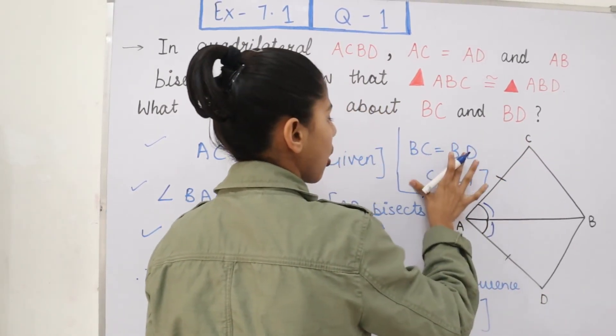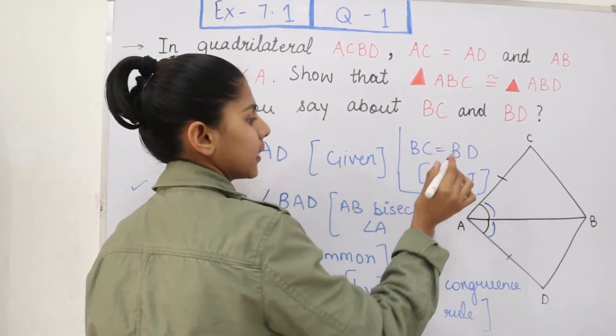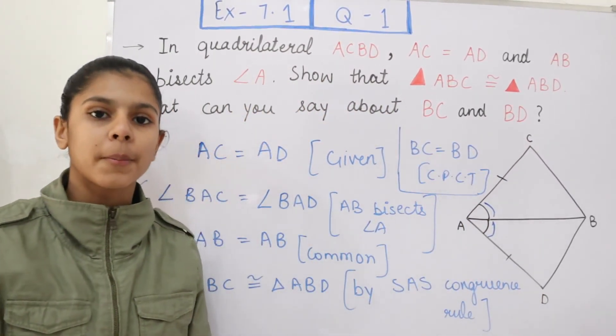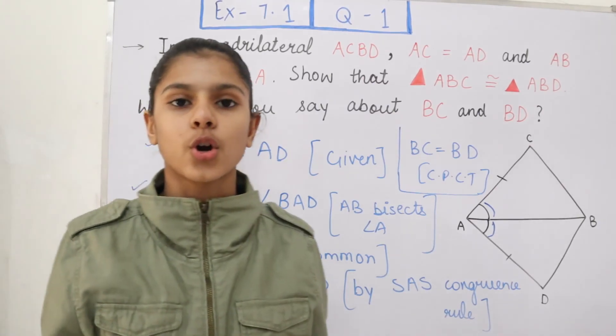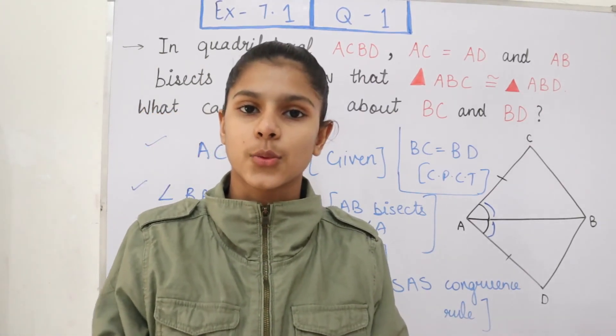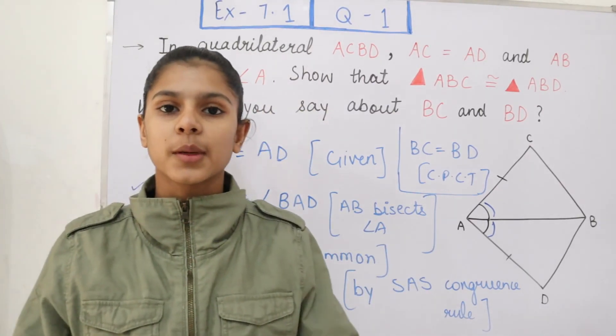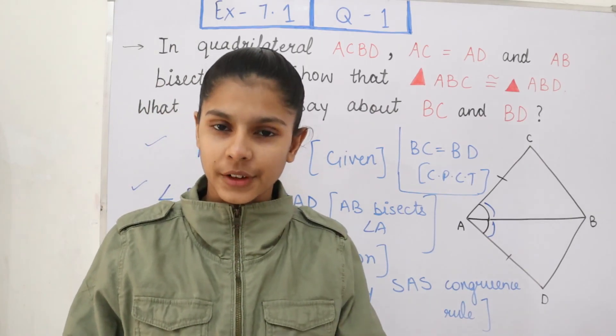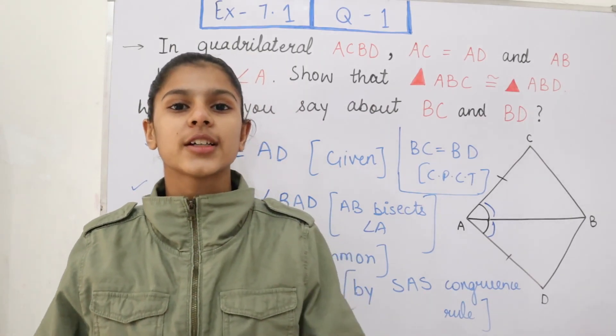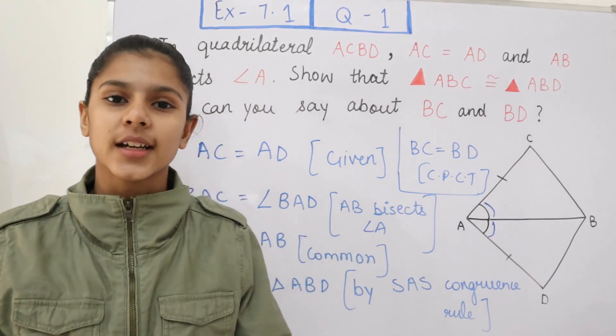So we have proved the triangles congruent and the rest of the corresponding parts are equal. This was question number 1 from exercise 7.1. Now let's move on towards our next question.